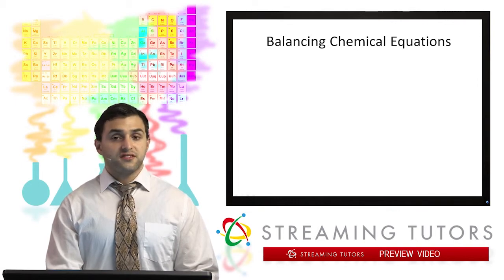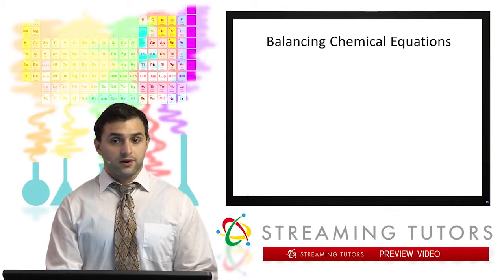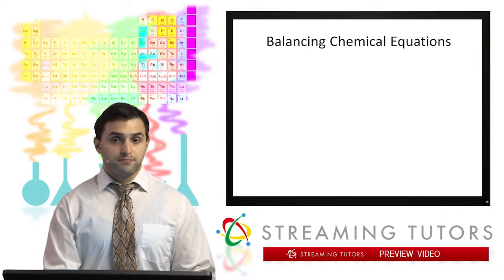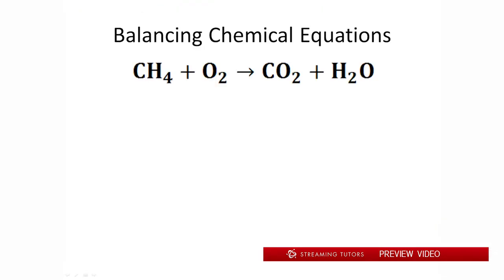So since we have to have the same number of atoms on each side of our equation, we have to make sure it's balanced. So if we take a look, let's look at this equation. We see CH4 plus O2 goes to CO2 plus H2O. Now off the bat, we can see that we only have two hydrogens over here, whereas we have four hydrogens here. So we need to balance our reaction in order to make sure that each side is the same number of hydrogens.